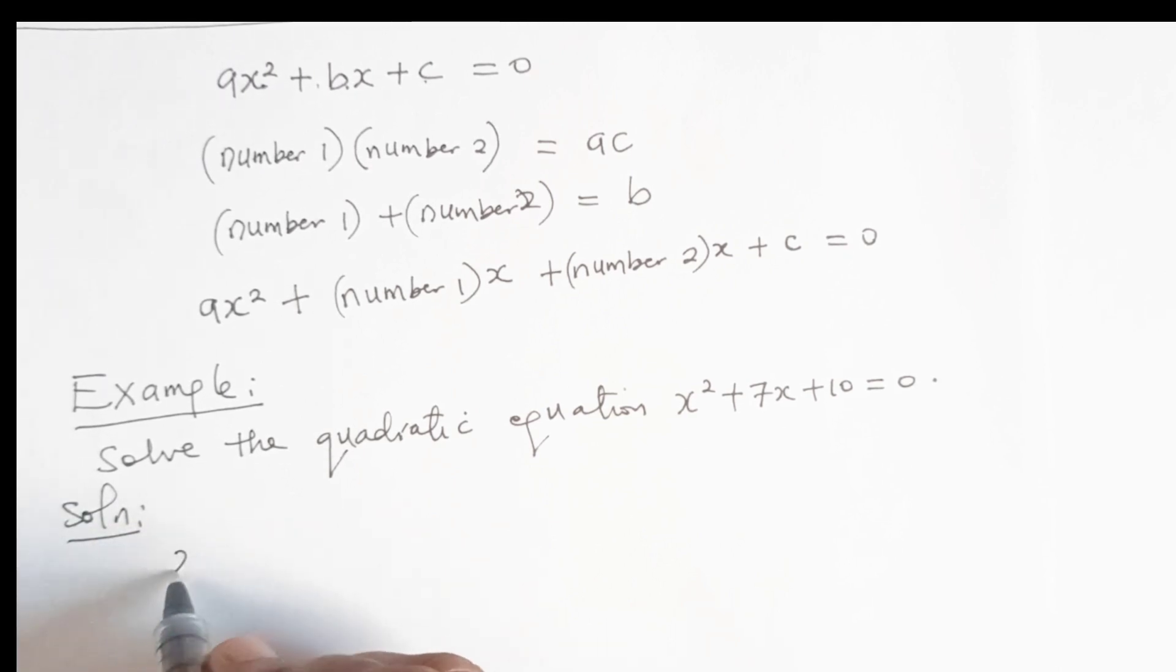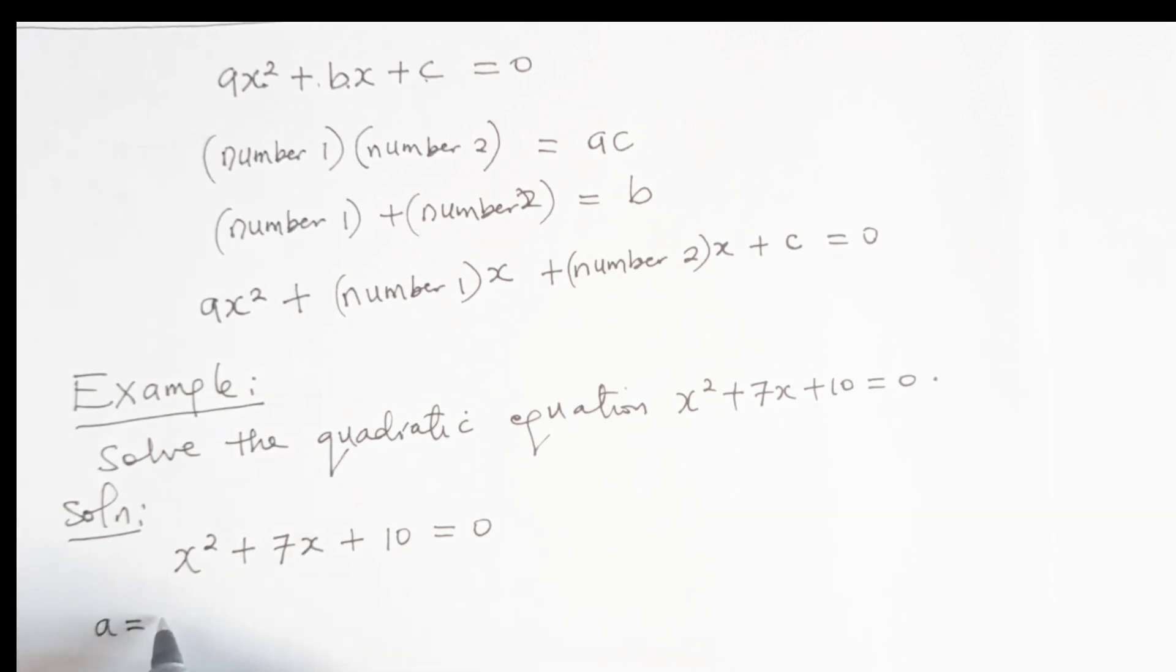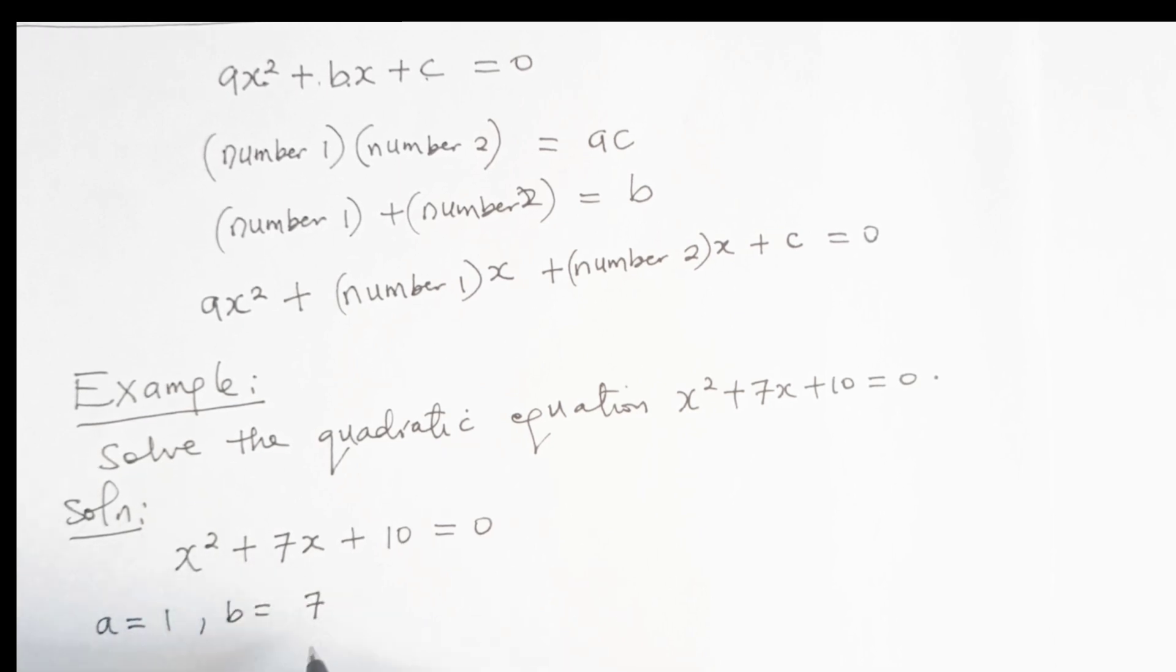The given equation is x squared plus 7x plus 10 equal to zero. Here we will see that a is equal to 1, b is equal to 7, and c is equal to 10. So a is the coefficient of x squared, b is the coefficient of x, while c is the constant term.